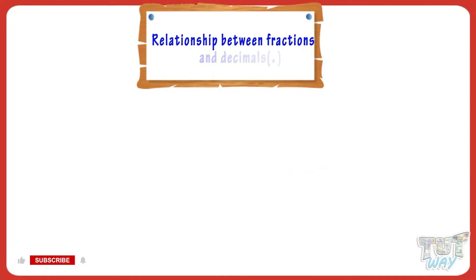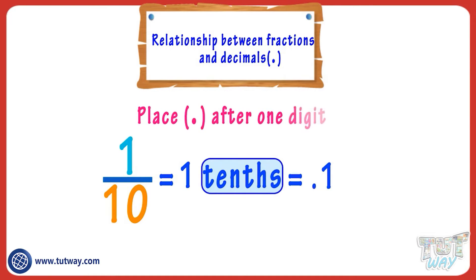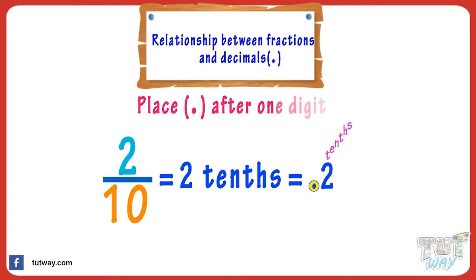What is the relationship between fractions and decimals? 1/10 equals 1 tenth equals 0.1. When it's tenths, you have to place the decimal after one digit from the left. 2/10 equals 2 tenths equals 0.2, as we place the decimal after one digit from the left.